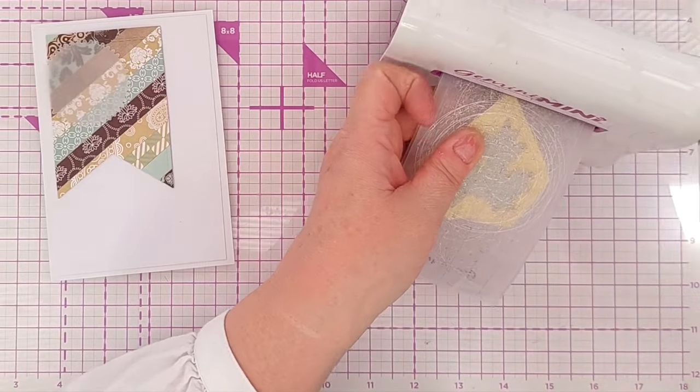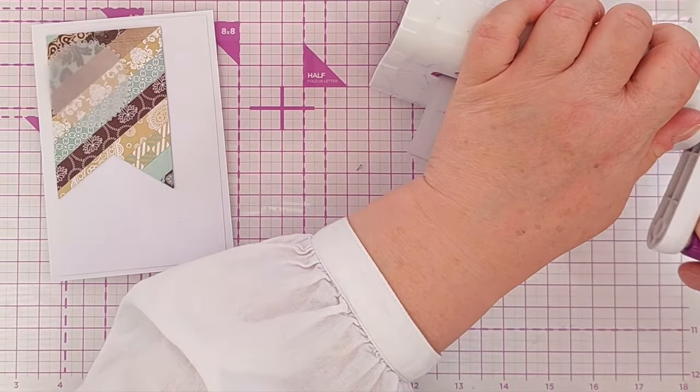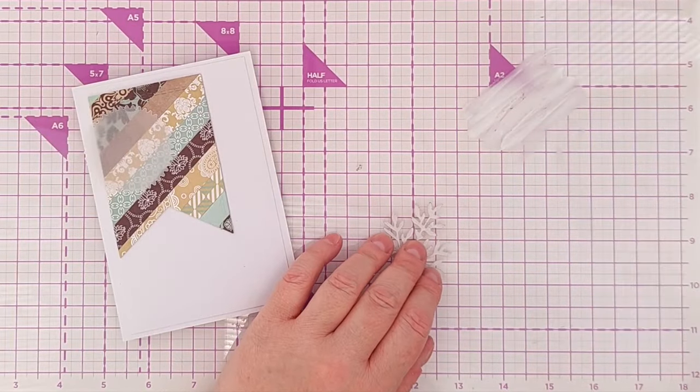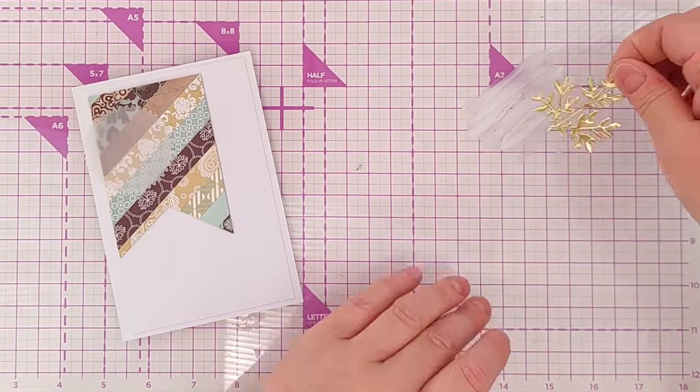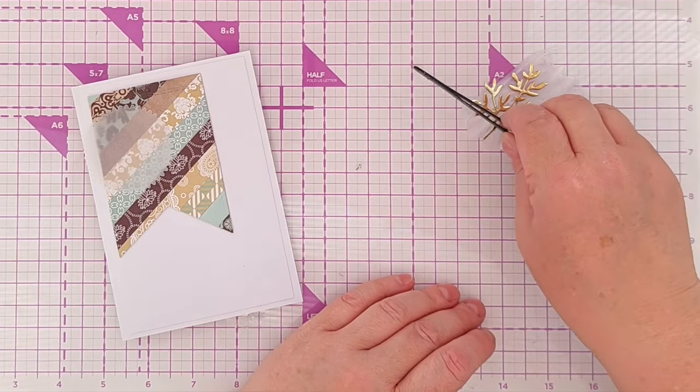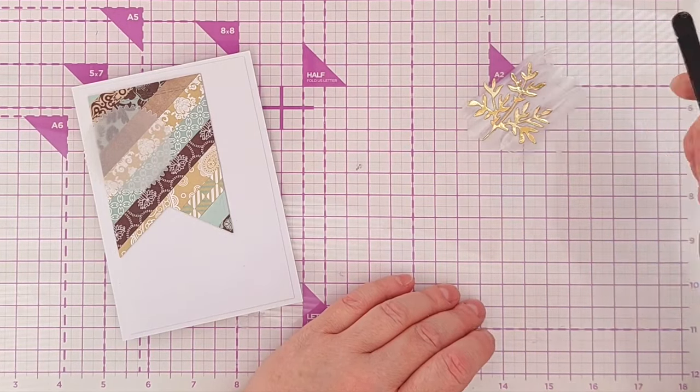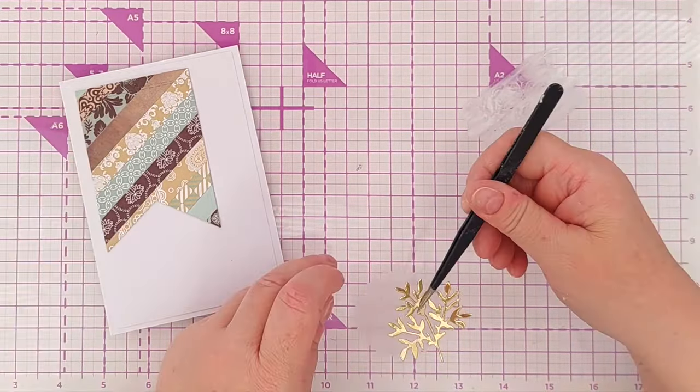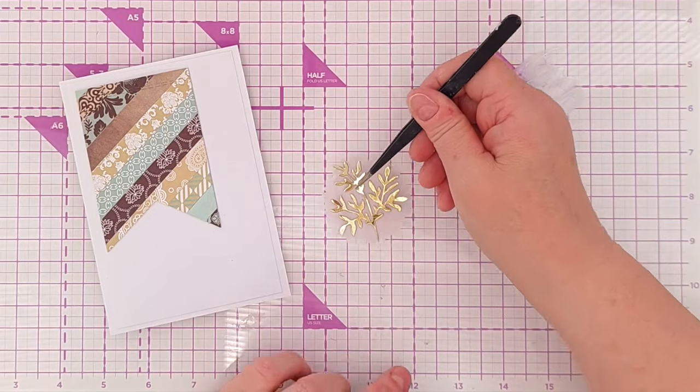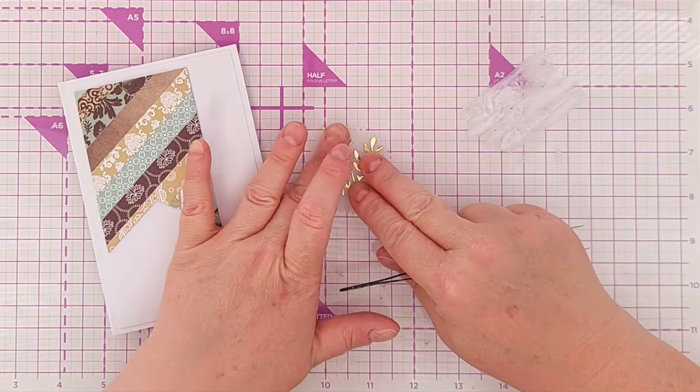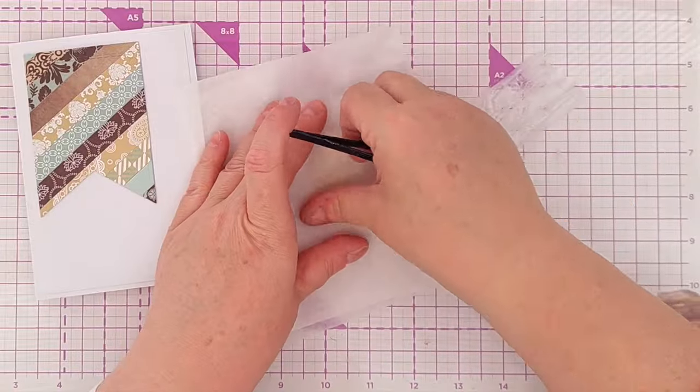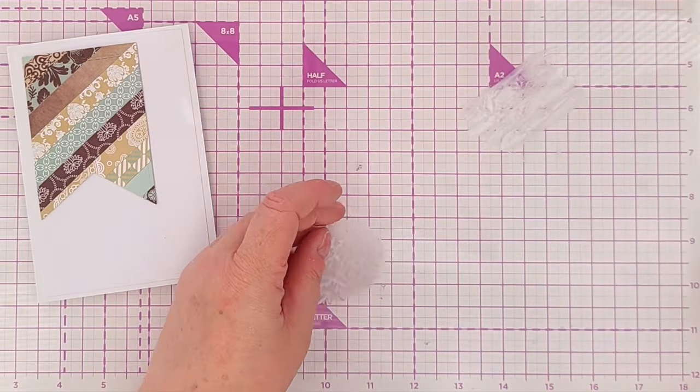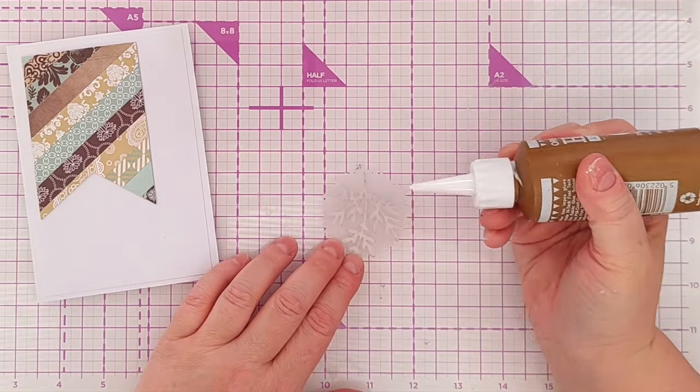I then cut a branch from gold foil cardstock and stuck that to the vellum cog using high tack glue. I then put ever such a tiny amount of high tack glue on the back of the vellum behind the leaves of the branch so that it hopefully wouldn't be visible, and then stuck that on the left hand side of my banner. So everything is kind of to the left leaving lots of lovely white space around the banner to give somewhere for the eye to rest from that busy pattern.